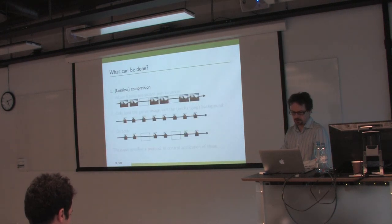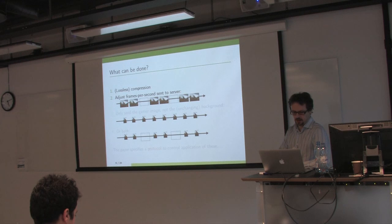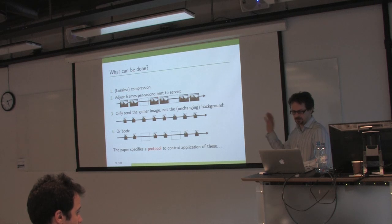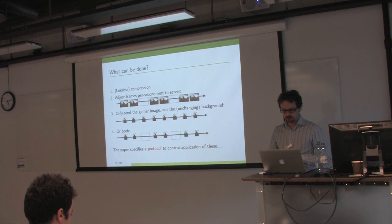In the paper, we look at a couple of ways that we can reduce the volume of data. They're all fairly obvious. First, compress the images. Don't send all the frames to the games platform and let them replicate frames at the other side. Just take the part of the image where the gamer is because there's going to be a lot of background which is unchanging. Do both together. And you could periodically also send the full background image and overlay the segmented image so that you get something reasonable to present to the game on the server. The paper specifies a protocol to control these various options.